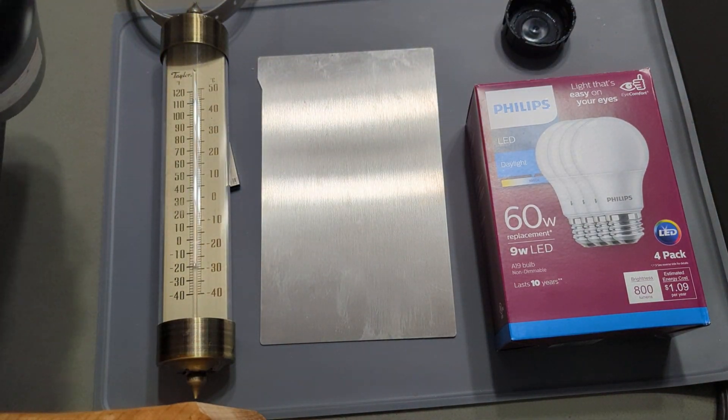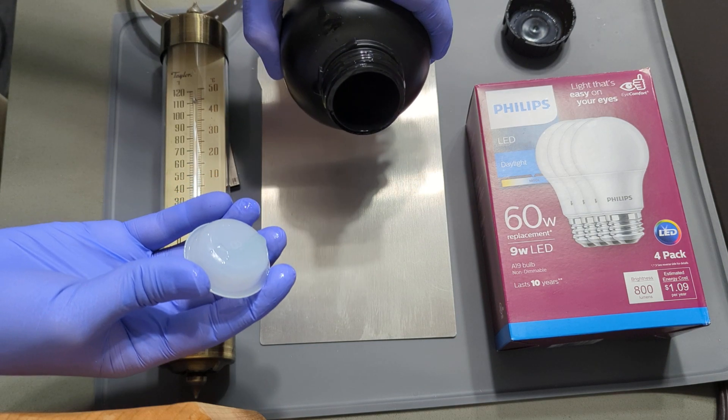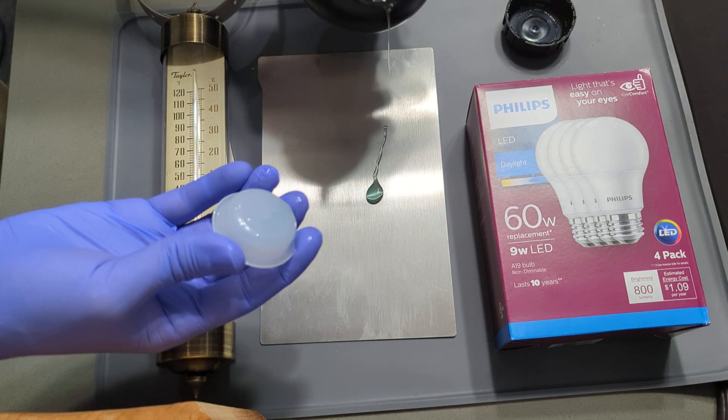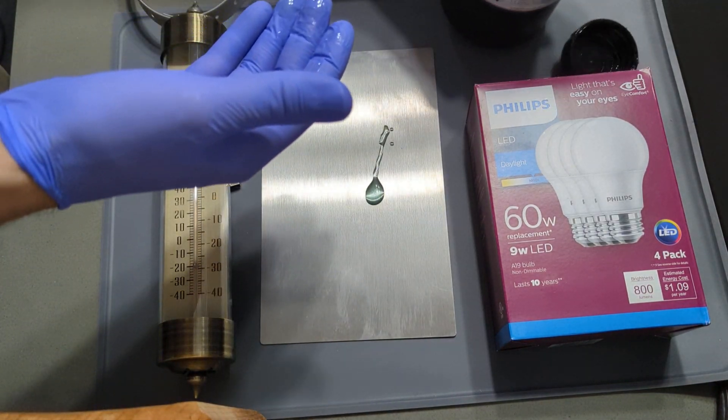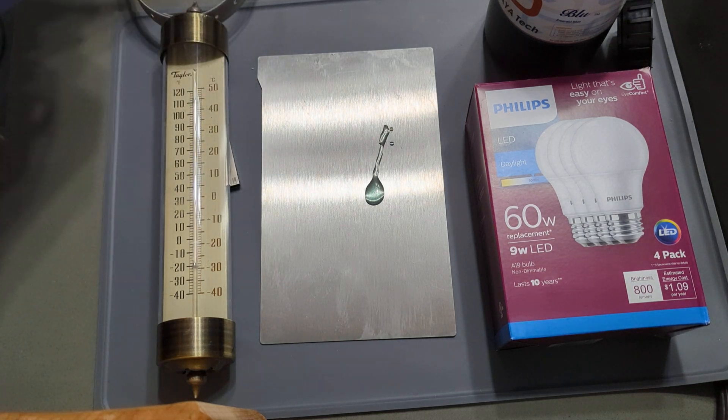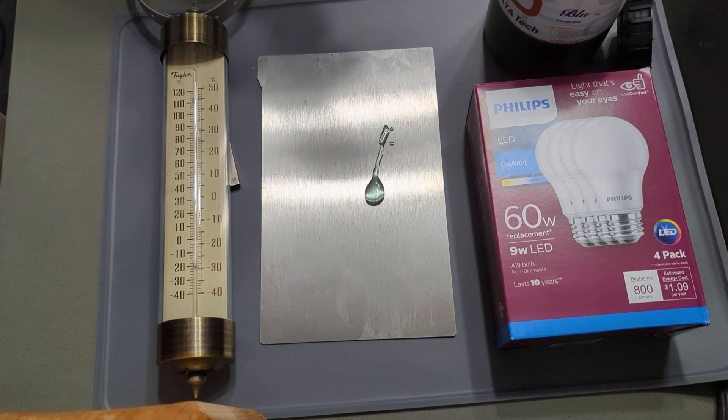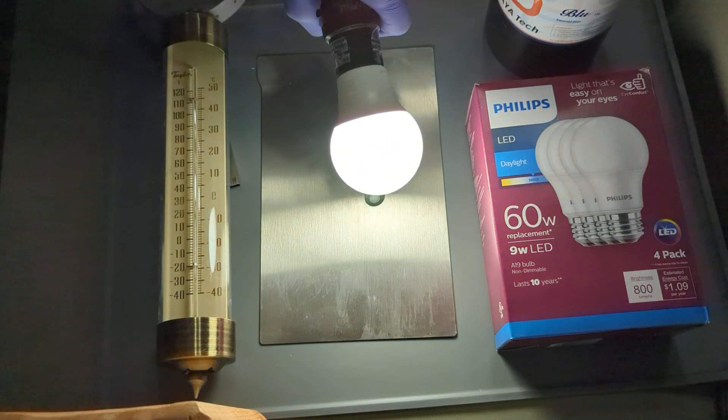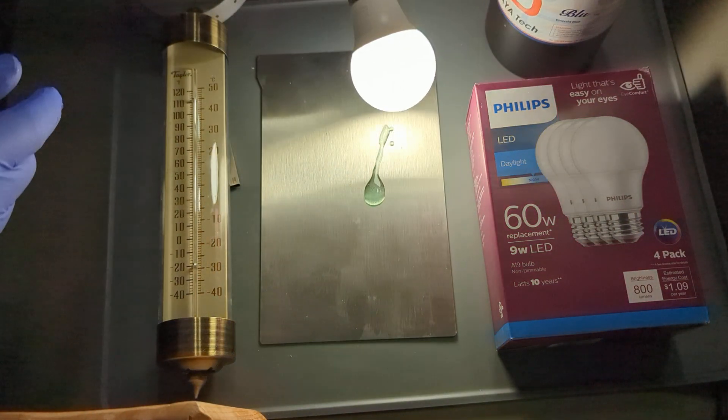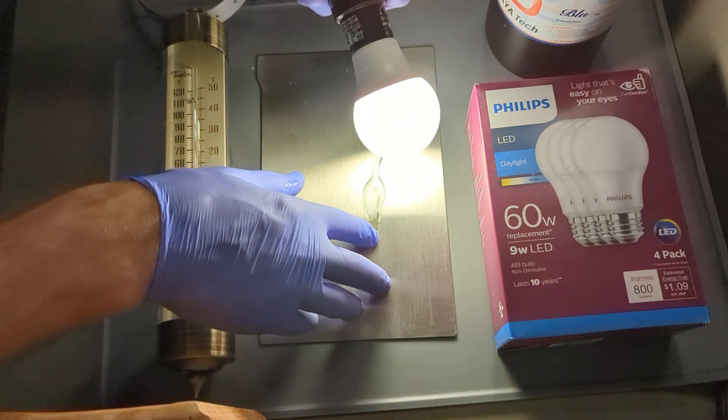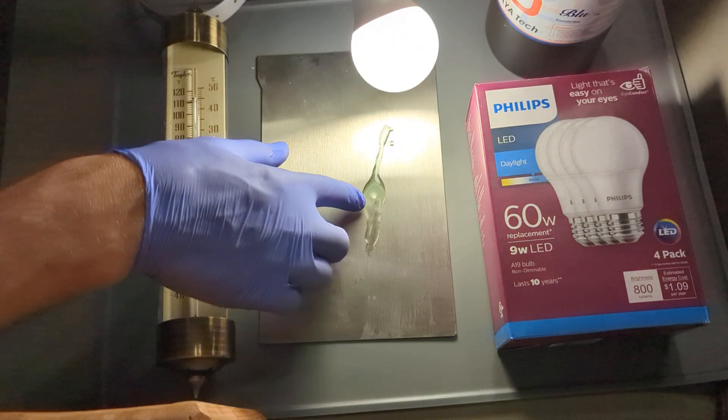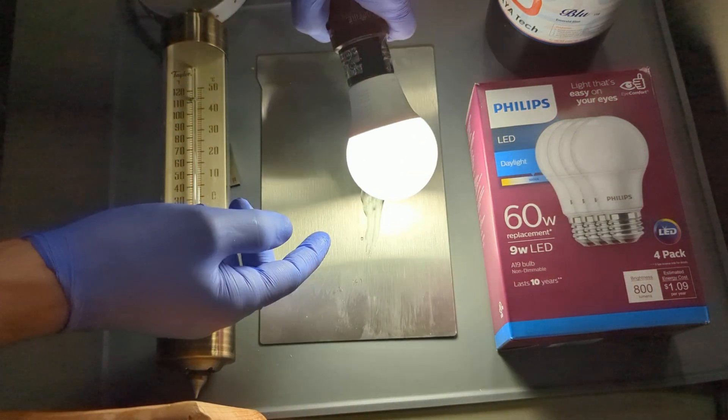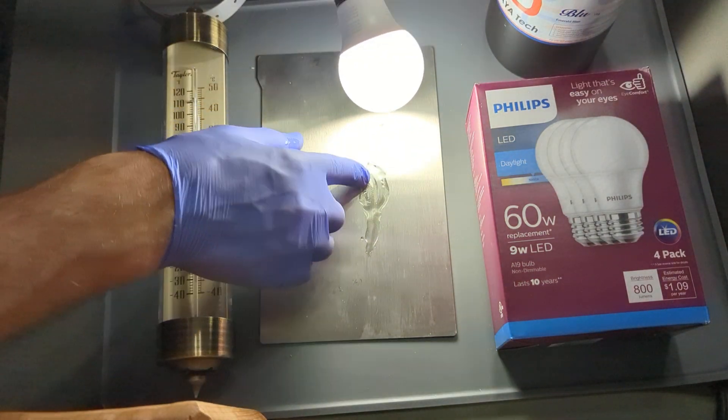So I'll do a quick demonstration. Pour just a little bit out on this flex plate, hit it with some good old Philips LED. Let's see, it will start to cure this resin. It doesn't take too long. There we go, trying to get it to cure.